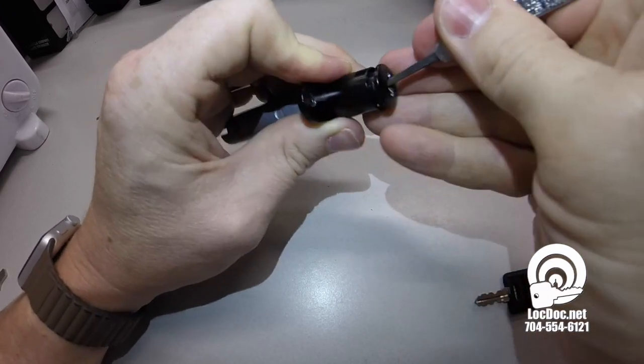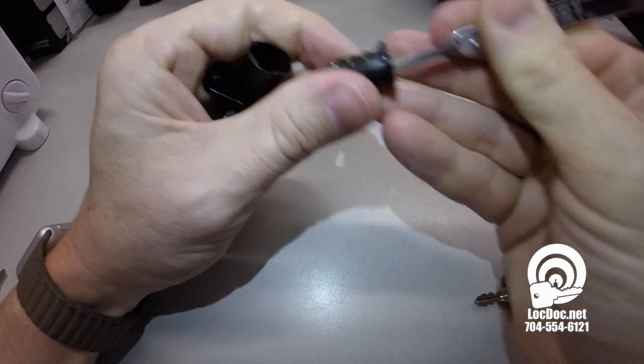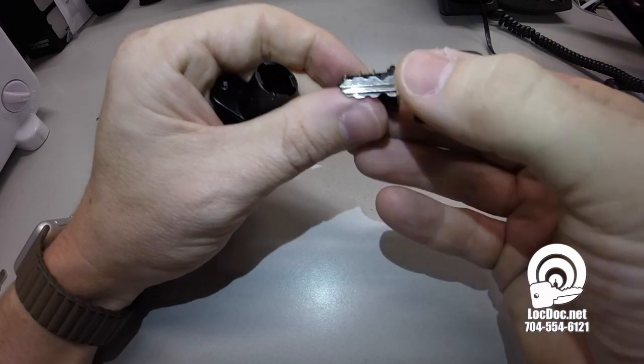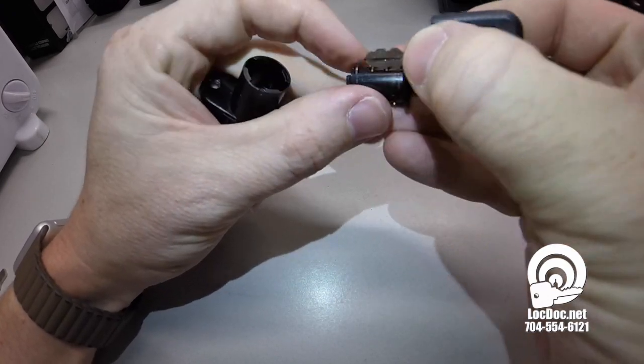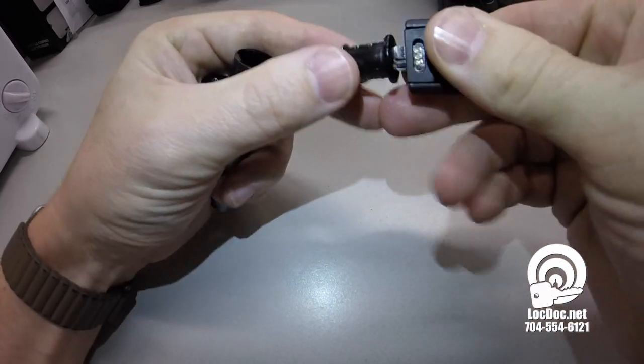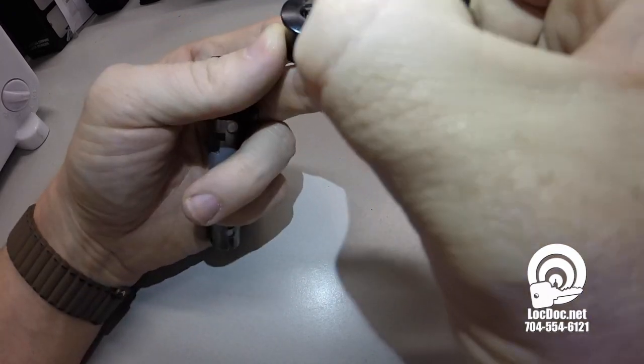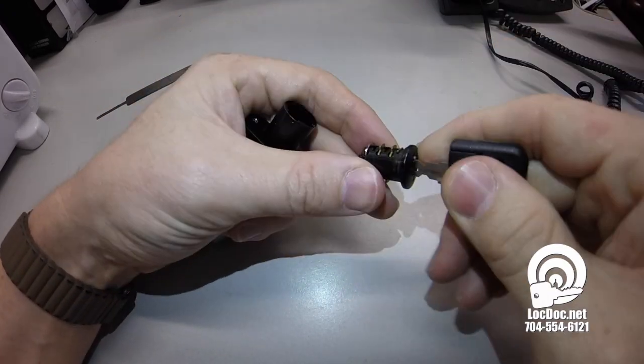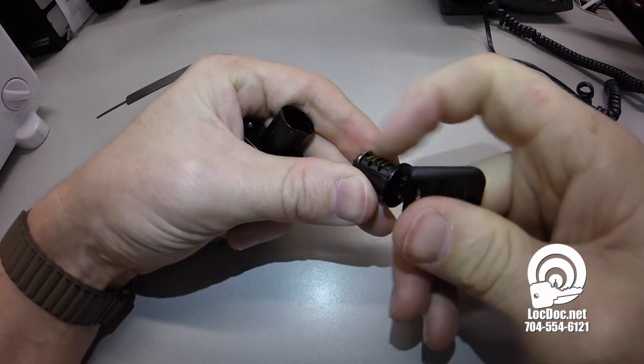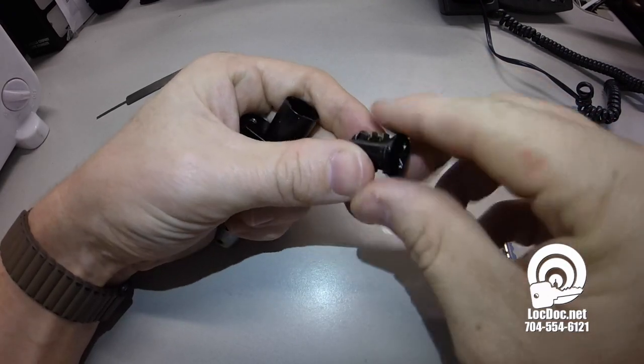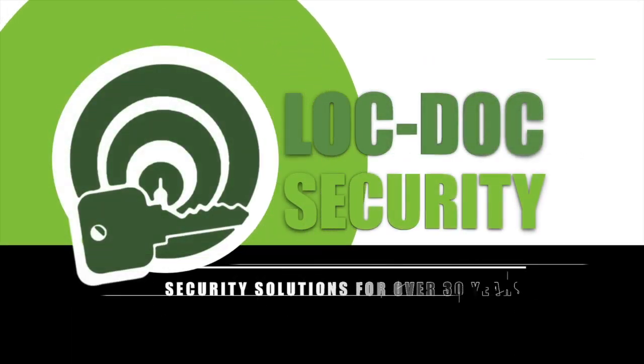Or the key has been cut incorrectly or too long, and whenever the key goes in it goes too far. Maybe the shoulders are worn down or the plug is worn down, allowing the key to go in further and then push that retainer pin down and allow that plug to pop out. So that's how you remove a cabinet plug.